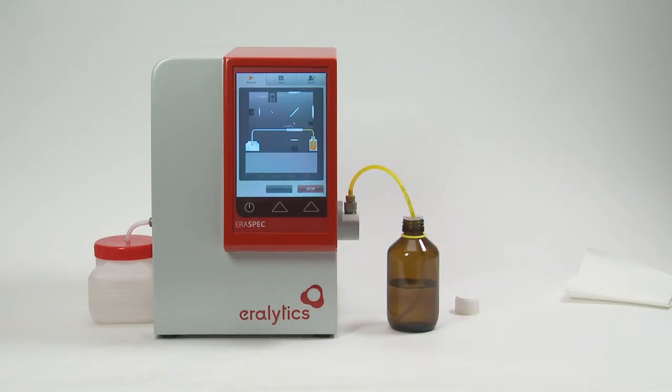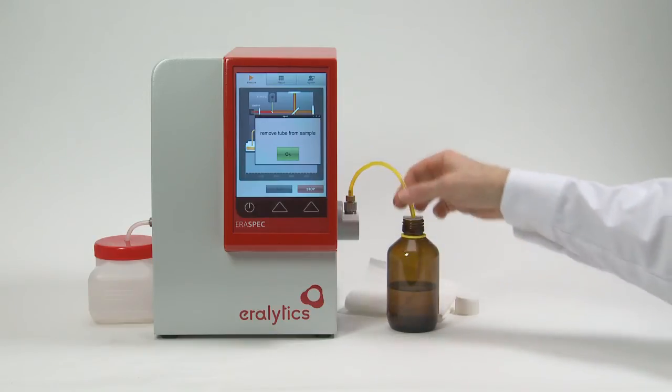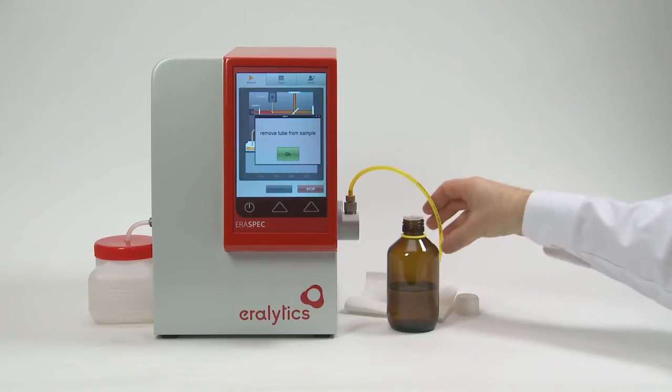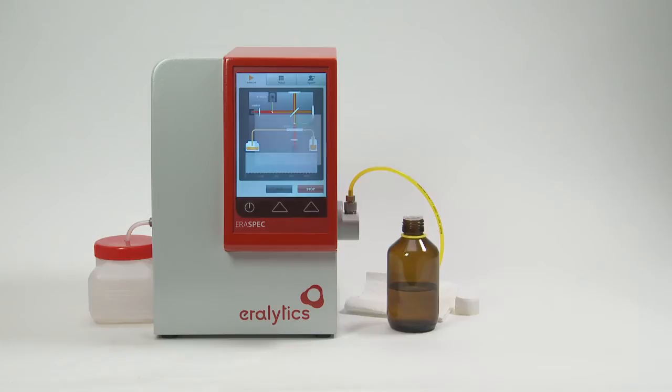The instrument automatically draws in about 12-15mm sample to rinse and fill the absorption cell and the built-in density meter. At the same time, the IR source is switched on. When the system is completely filled with sample, please remove the inlet tube from the sample container and confirm this on the analyzer. AeroSpec now measures the IR spectrum.